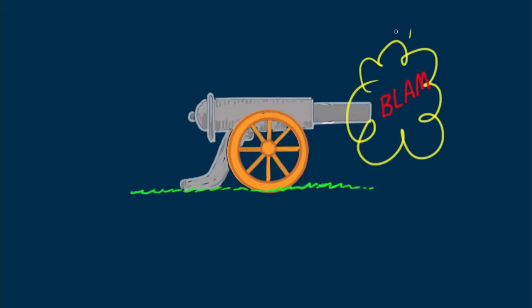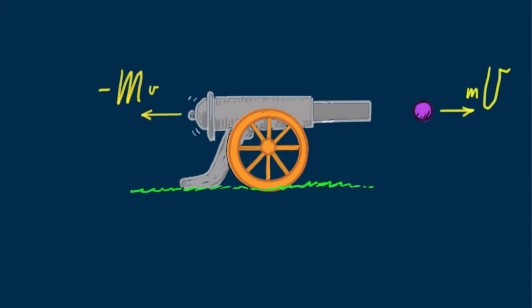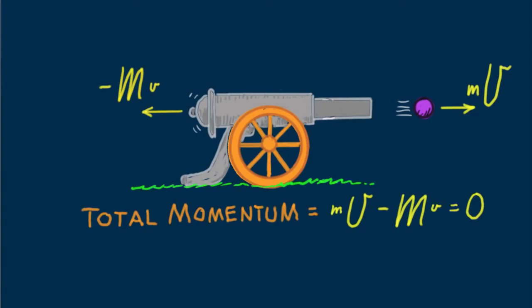Before firing, the system is at rest and the momentum is zero. After firing, the net momentum — or total momentum — is still zero. The cannon recoils to the left with the same amount of momentum as the cannonball. Net momentum is neither gained nor lost. The cannonball's momentum is mainly velocity, while the cannon's momentum is mainly mass. As vector quantities, they cancel to zero. Total momentum is unchanged: zero before firing and zero after firing.